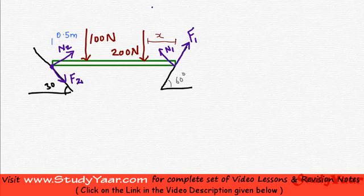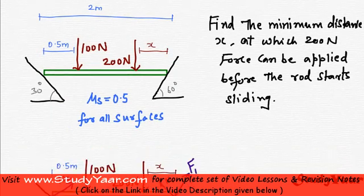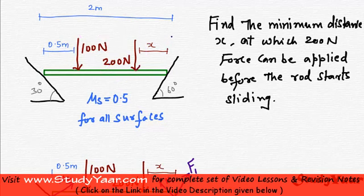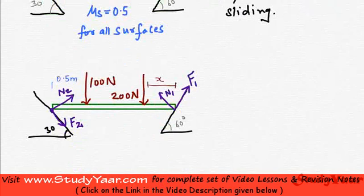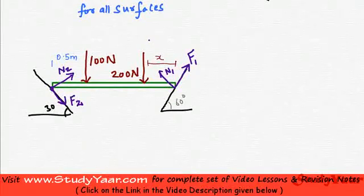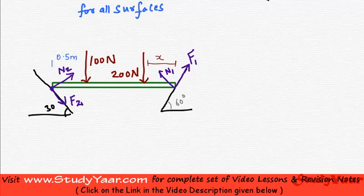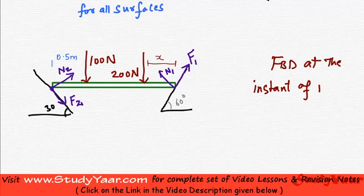Is there any other force acting on this? No, we have just 100 N and 200 N force acting on this rod. Look, the weight of the rod is not given. Therefore, we are assuming it is weightless or the weight is very small as compared to other forces over here. So, that is the FBD of my rod when the motion is just about to happen. This is my FBD at the instant of impending motion.